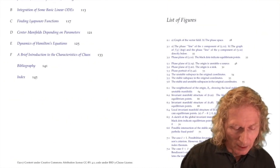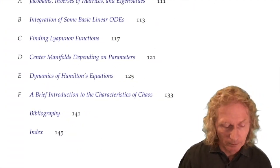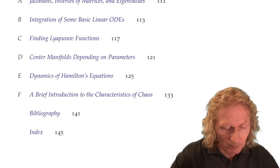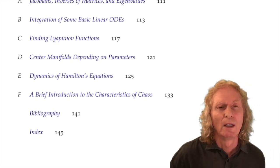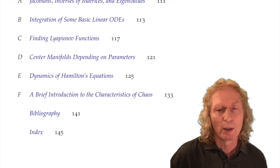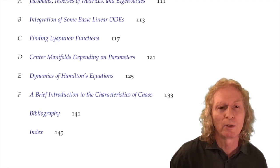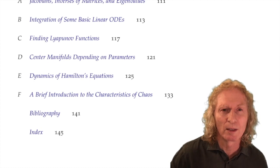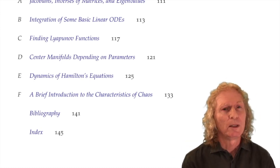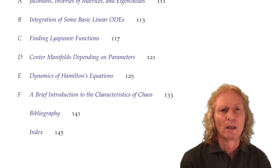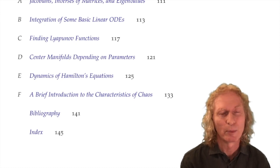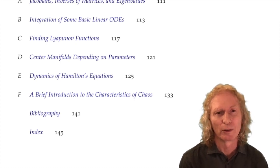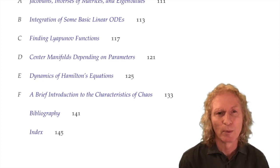And then I have six appendices. In the first appendix, Jacobians Inverses of Matrices and Eigenvalues, this is something that you already know, you're supposed to know, but in my experience, students tend to have forgotten. Appendix B is, in some sense, an entire course of what is often taught for differential equations. And you can boil it down in one appendix. And if you have the right mathematical structure, it's dead easy and you can go from there on.